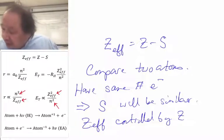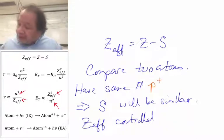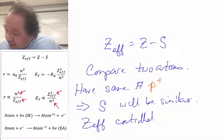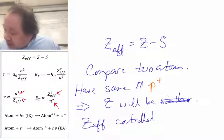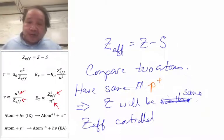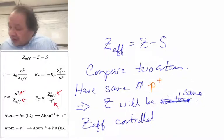And we have a parallel effect if we have not the same number of electrons, but we have the same number of protons. Z will not just be similar, Z will be the same. They have the same number of protons, which means Z doesn't affect Z_eff. The only thing that controls Z_eff is S.